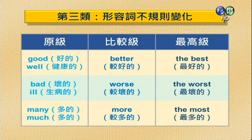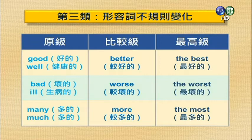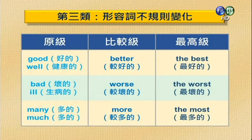第三类是形容词的不规则变化，原级比较级最高级分别是：good/well 的比较级是 better，最高级是 the best；bad/ill 的比较级是 worse，最高级是 the worst；many/much 的比较级是 more，最高级是 the most。